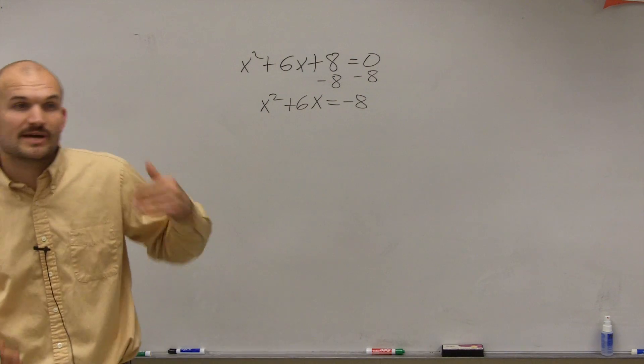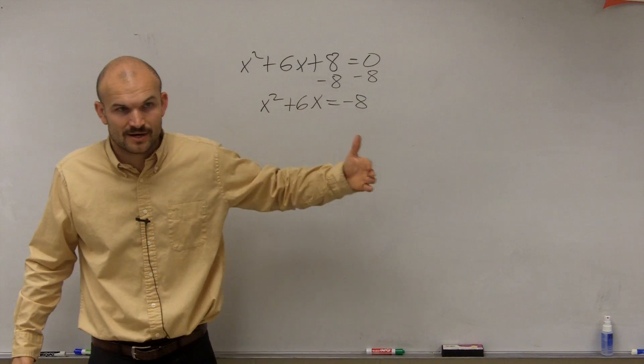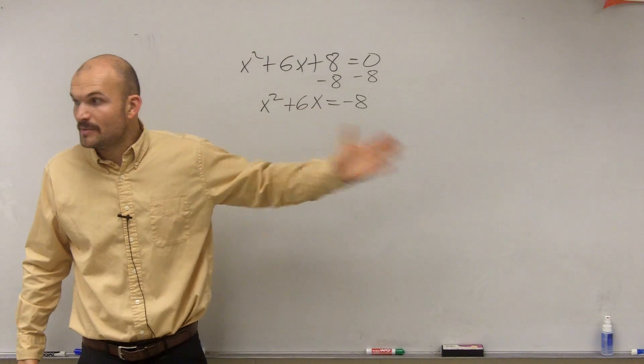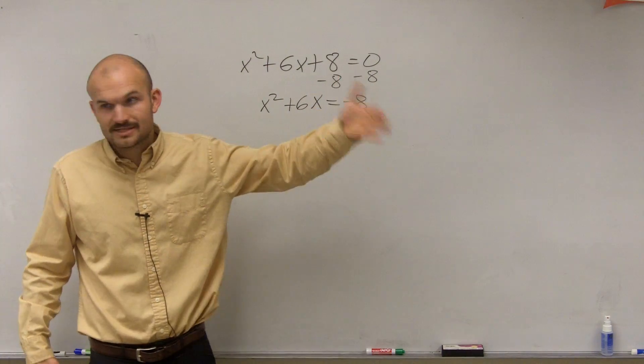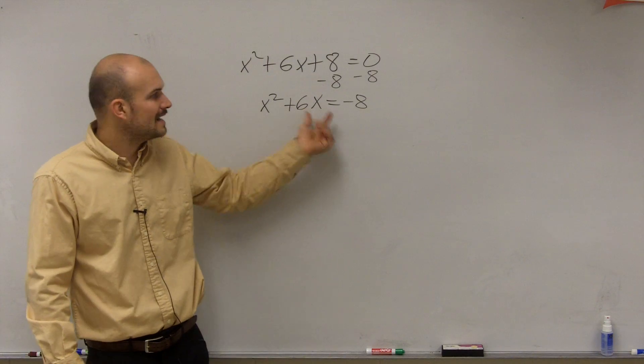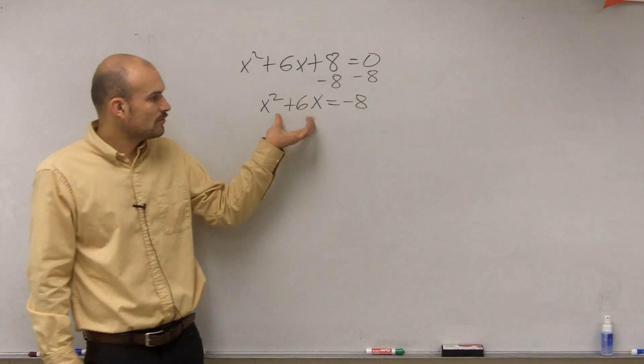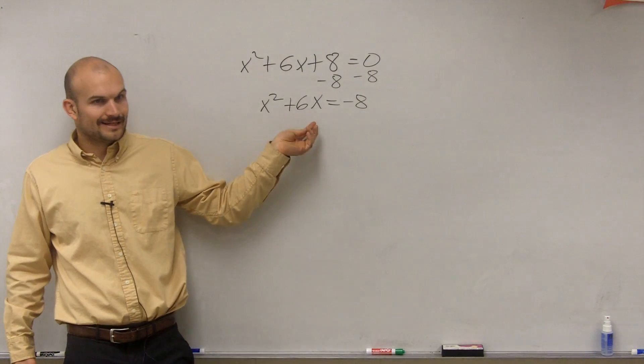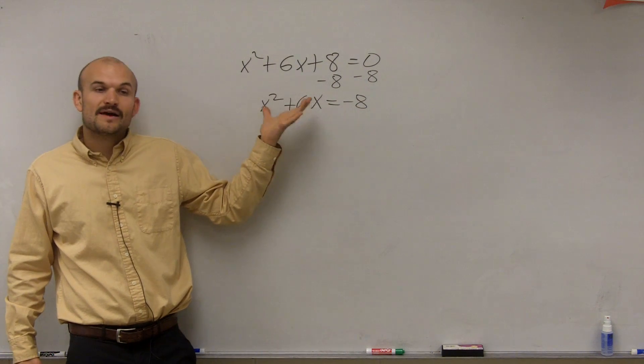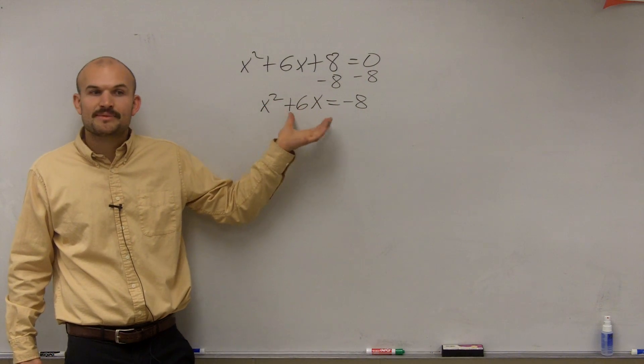Now on the top of your homework, you guys worked on creating perfect squares. Remember it said find the value of c that creates the perfect square? That's exactly what you're going to do here on the left side of the equation. So right now I have a quadratic and a linear term. I need to find the constant term that will create this to be a perfect square.